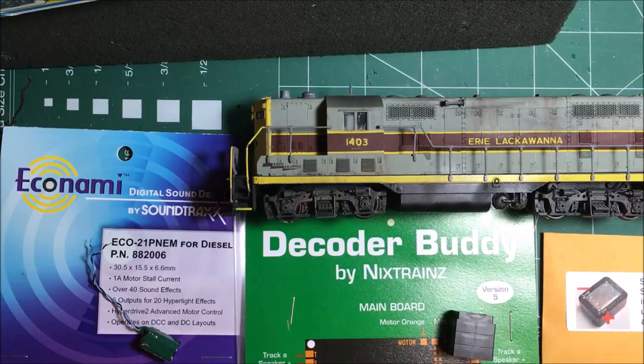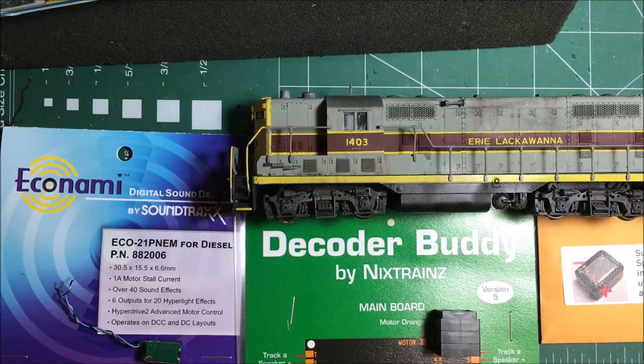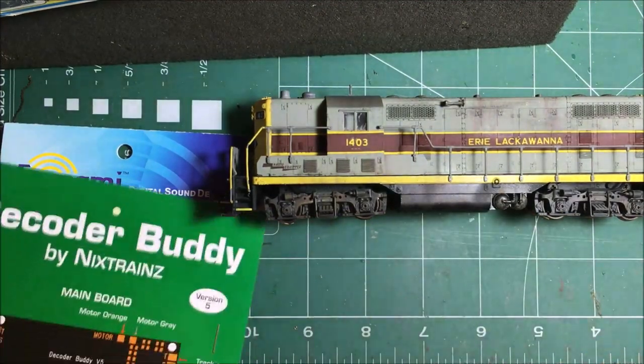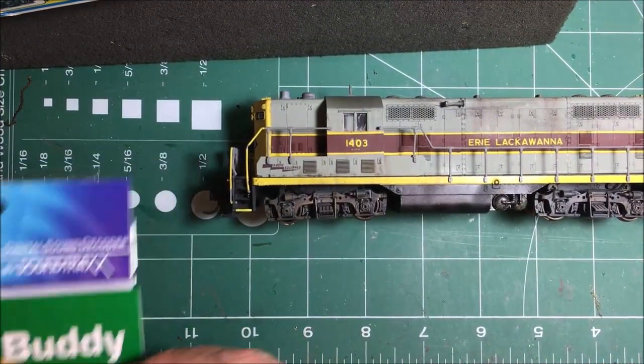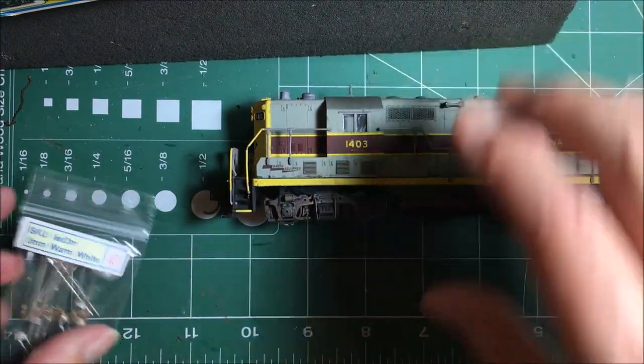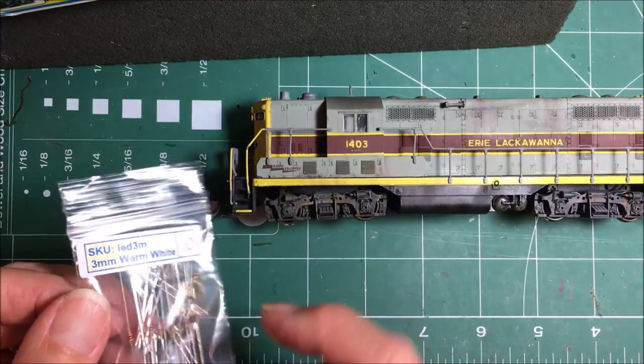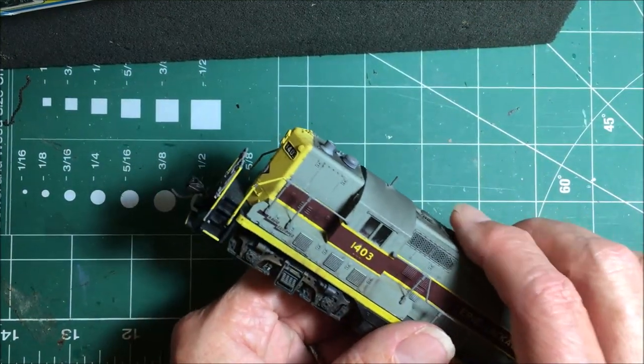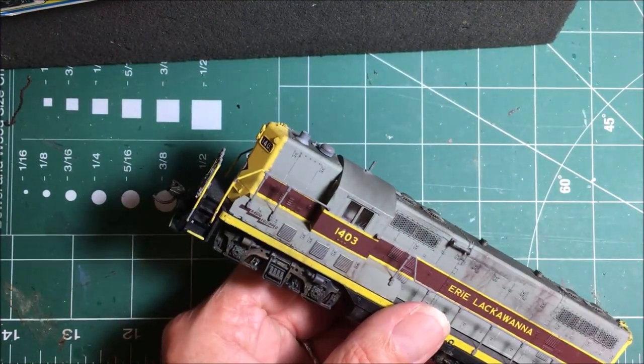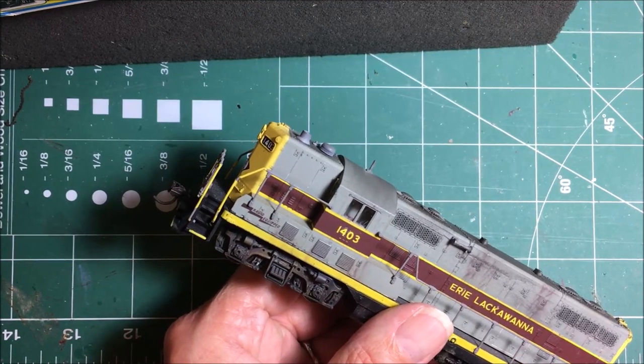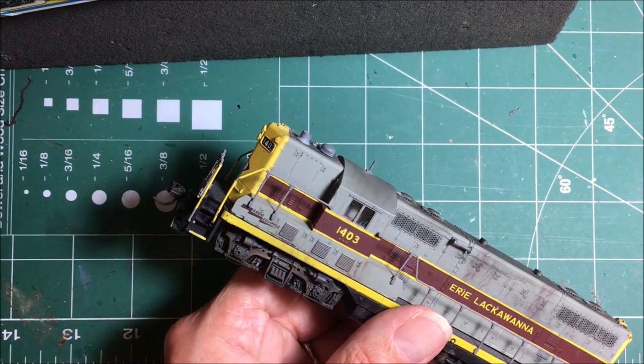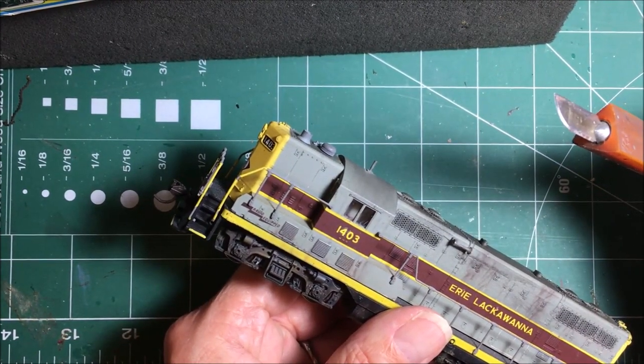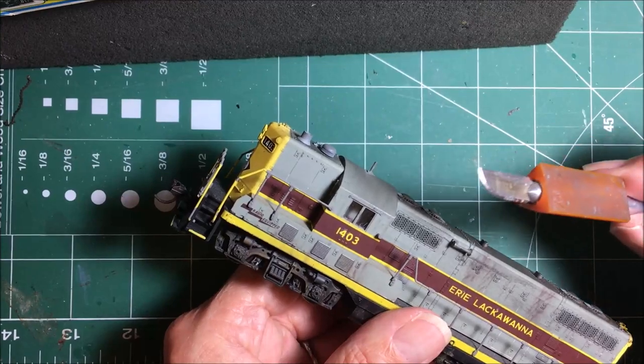So to begin with, we need to cut into the patient. Let's get these goodies out of the way and prepare the patient for operations. I forgot the LEDs they were underneath. To begin with, if you have never taken apart a GP7, this is an Atlas Kato GP7.